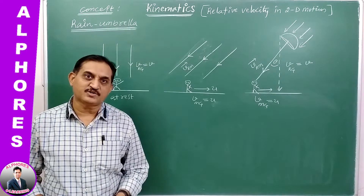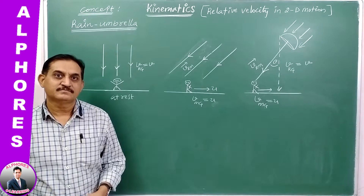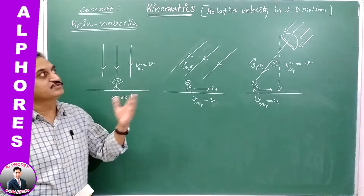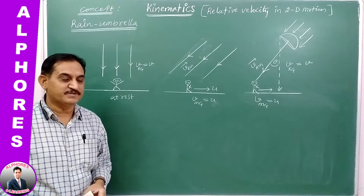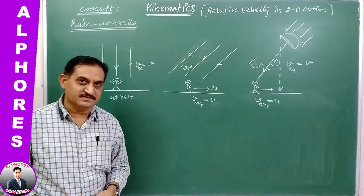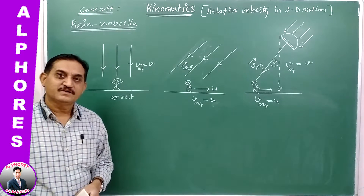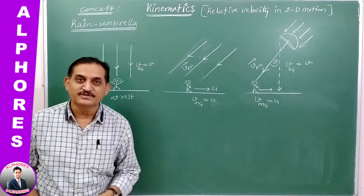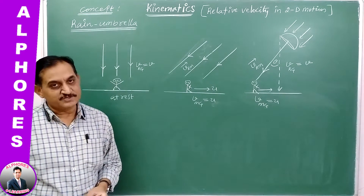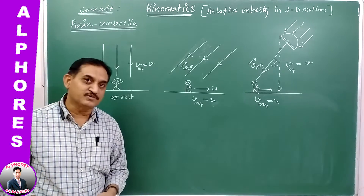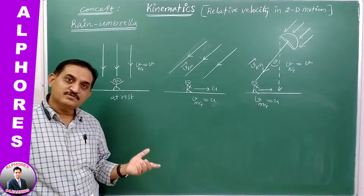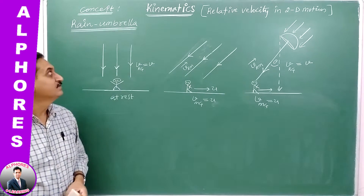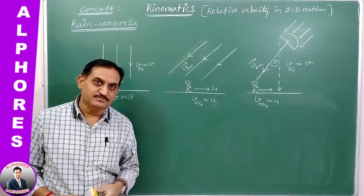Hello students, this is Ms. Raw, welcome to All Force E-Learning. The next concept is rain umbrella, which belongs to relative motion in 2D — two-dimensional relative motion, that is the relative velocity concept. We have discussed many cases and done problems related to relative velocity. We already completed the river-boat concept, and the next concept is rain umbrella, which also belongs to relative velocity in 2D.